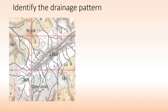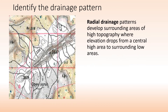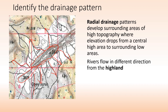The next is the radial drainage pattern. Radial drainage pattern develops surrounding areas of high topography where elevation drops — from a central high area to surrounding low areas. From a central hill, rivers flow outward in different directions: north, south, east, west. When you find a highland in a drainage pattern map, first check whether it is a radial pattern.